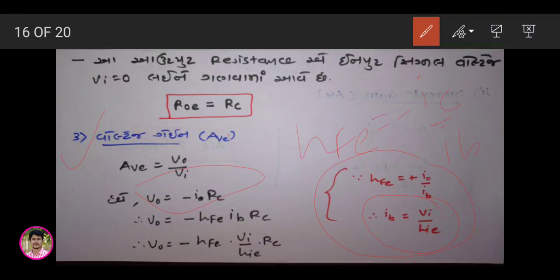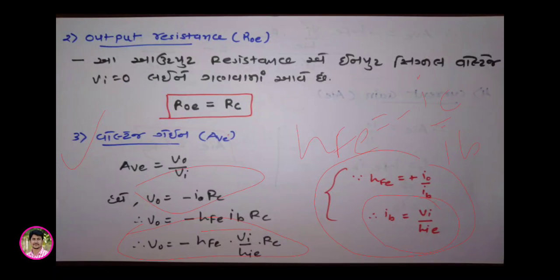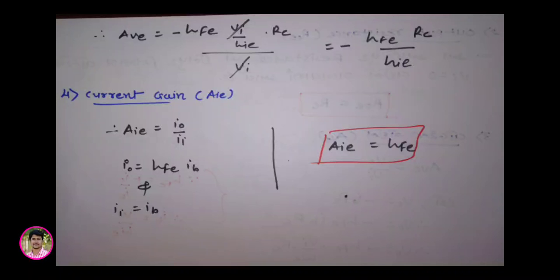V0 is equal to minus hfe × ib upon hi × RC. Now we have index plus Vin, so this covers the check for the voltage gain. The whole expression is equal to minus V × RC.